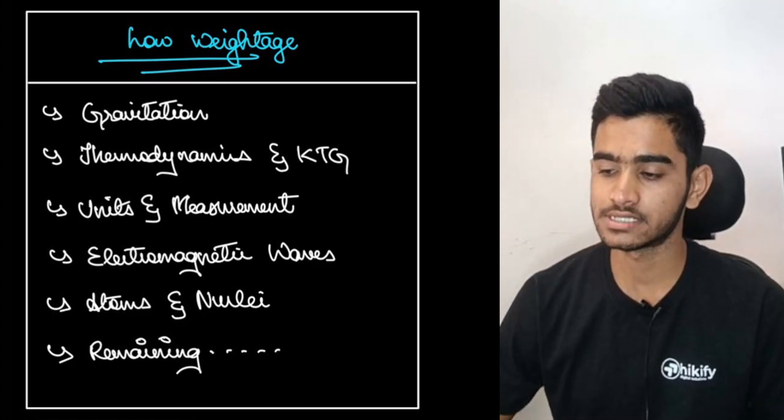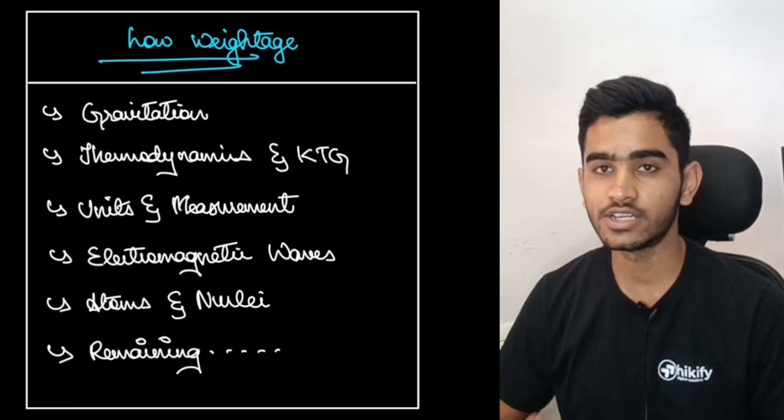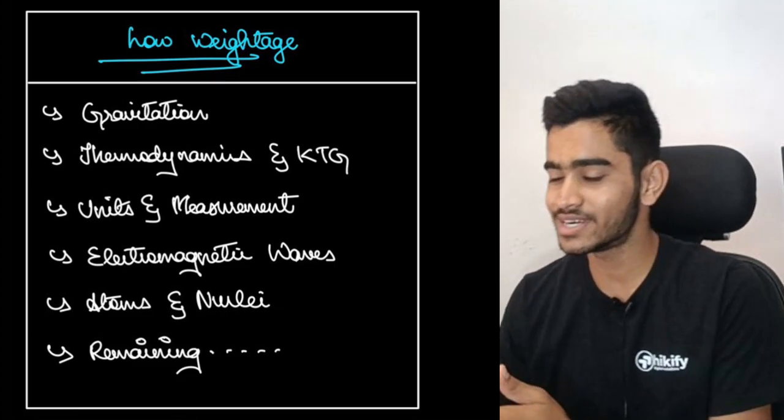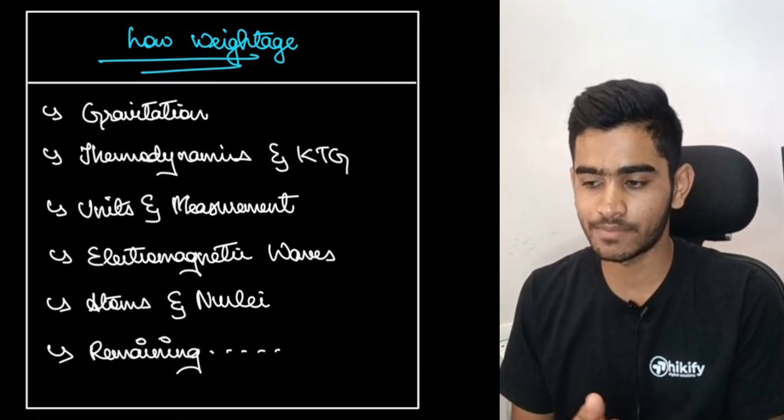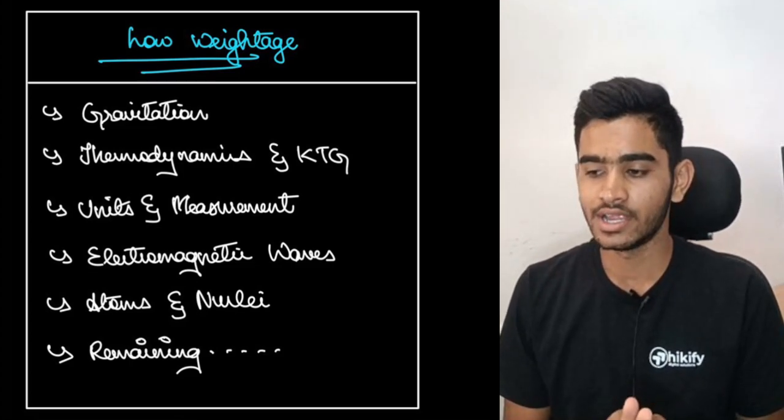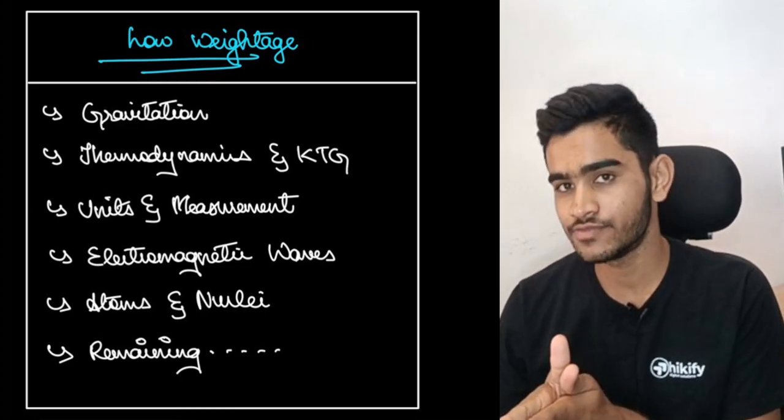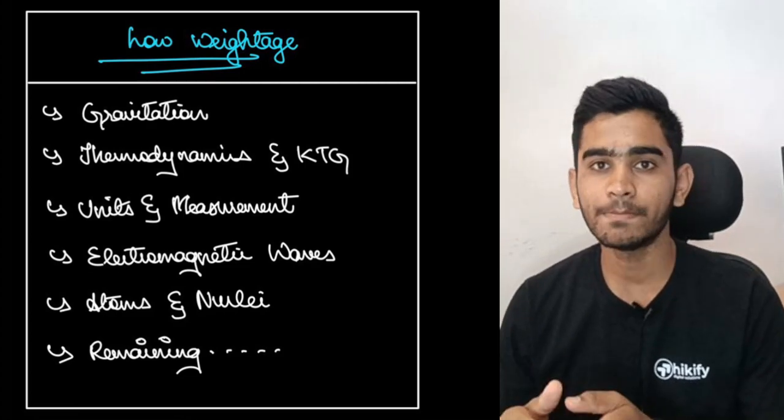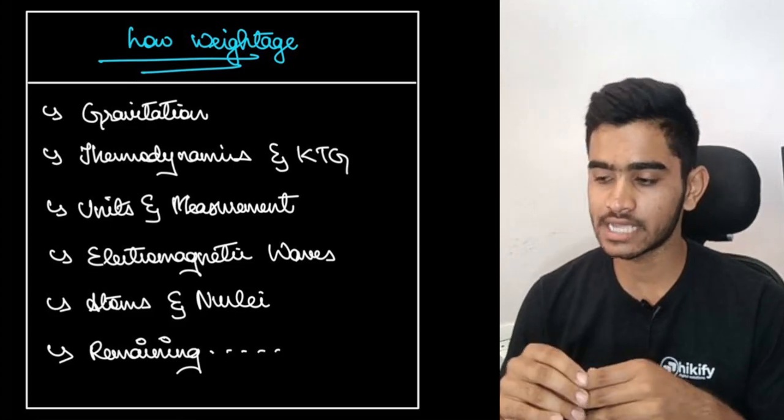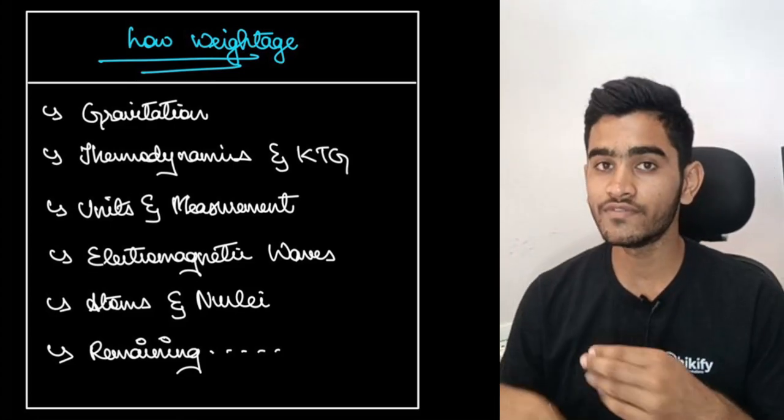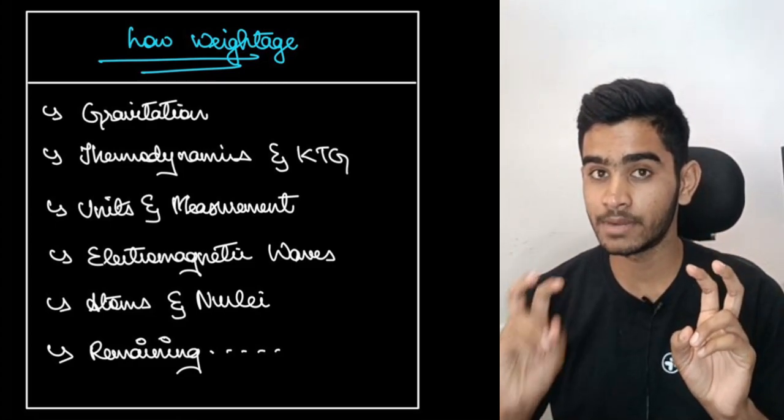Talking about the low weighted chapters out here, first one is gravitation. Gravitation is often referred to as the twin of electrostatics but the weightage isn't or the analysis or weightage analysis of previous 10 years KCET papers don't prove the fact that both of them are twins because gravitation relatively has a less weightage and it comes under your 11th part and please go through it once. Then comes your thermodynamics and kinetic theory of gases.